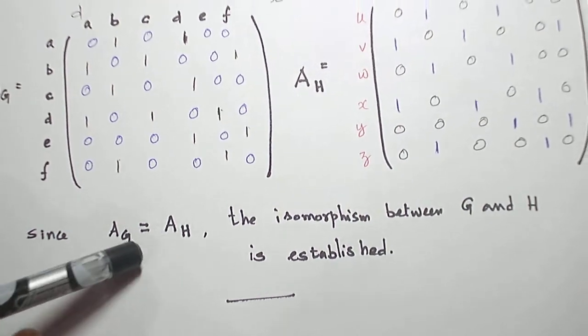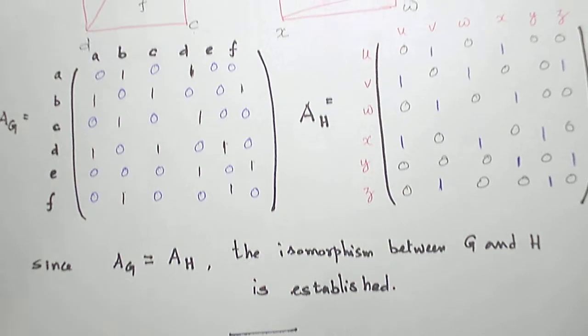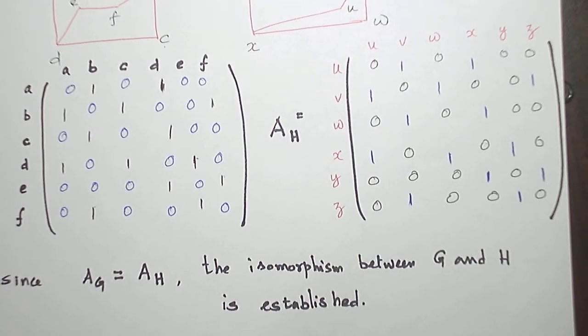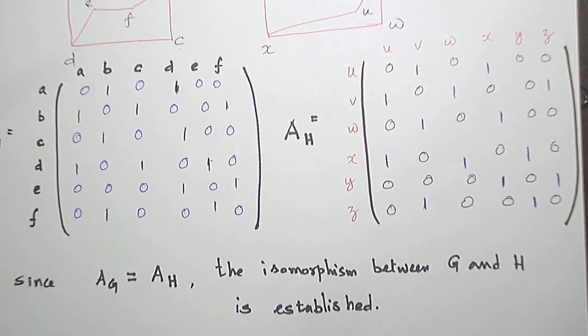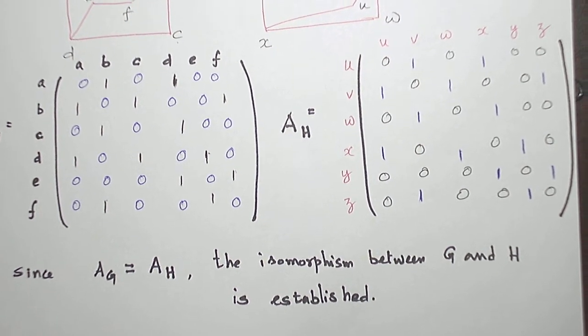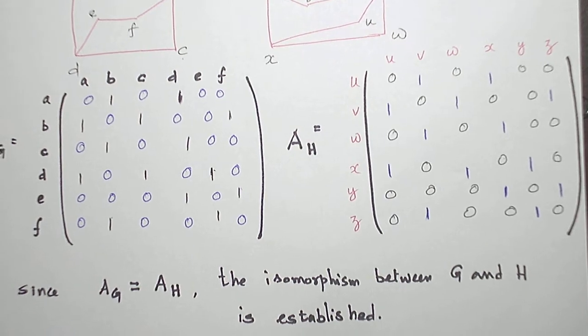Adjacency matrices are equal, so when the adjacency matrices are equal, we shall say the two graphs are isomorphic and we conclude isomorphism is established. So let us see another problem in the next video. Thank you.